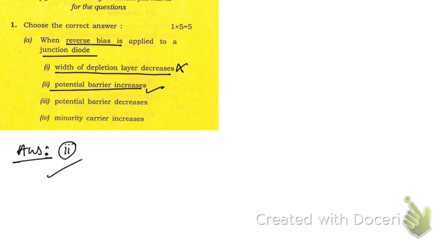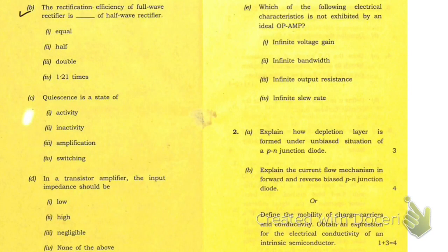Now let's move on to the next MCQ. The rectification efficiency of full wave rectifier is two times that of half wave rectifier. It's double. This is option three.